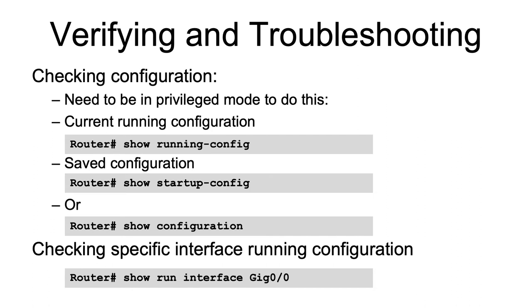How do you verify and troubleshoot on a router? Note that you need to be in privileged mode to do this. You can type 'show running-config' to view the current running configuration of a router, or you can type 'show startup-config' to look at the startup configuration of a router.